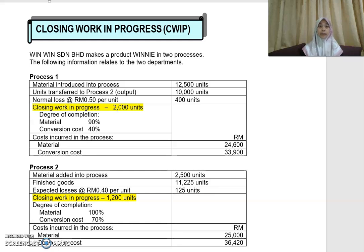Bismillahirrahmanirrahim. Now we move on to see the comprehensive example of closing work in progress. This is the question. Win-win Srinya Barhat makes a product using two processes, and the following information relates to the two departments — process one and process two.